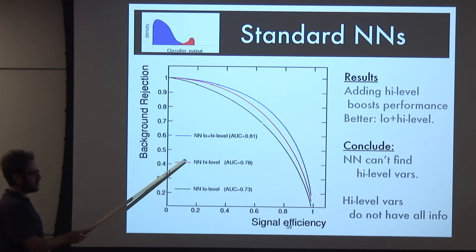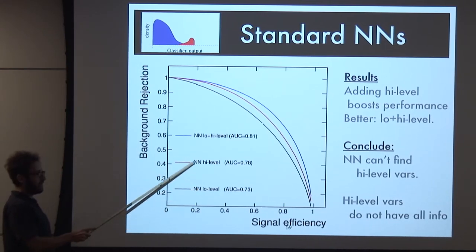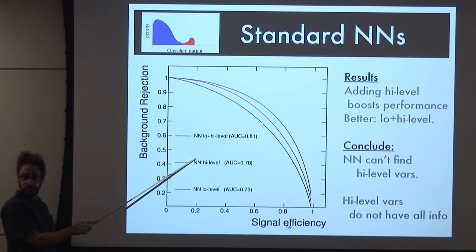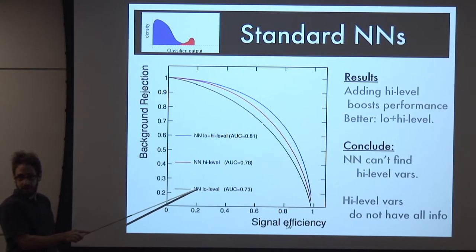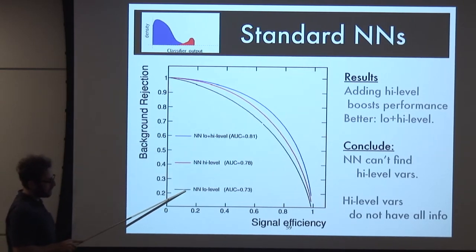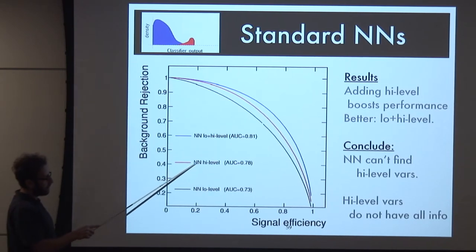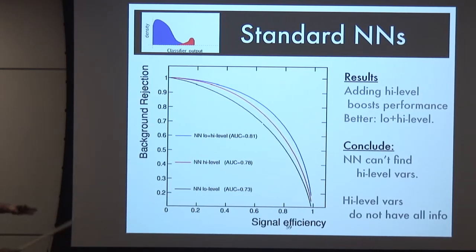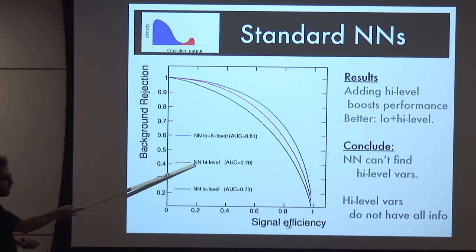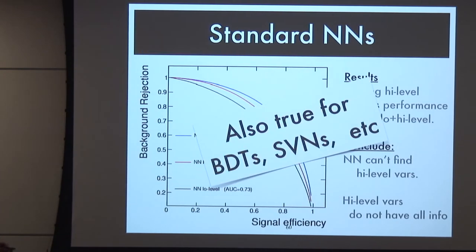This is what I expected - I constructed this example to have my network fail and demonstrate something was missing. When I apply my physics intuition, I beat the dumb network. I also tried BDTs, support vector machines, et cetera. Then I sent the data over to my computer science colleagues.